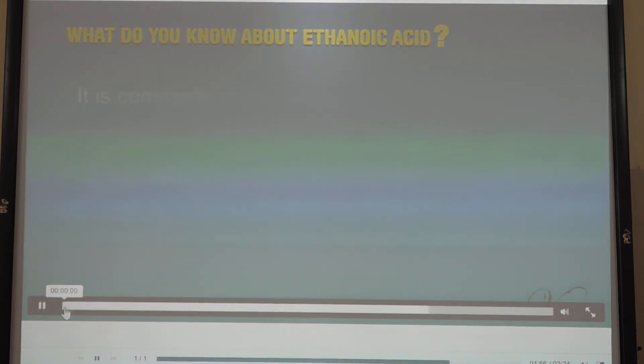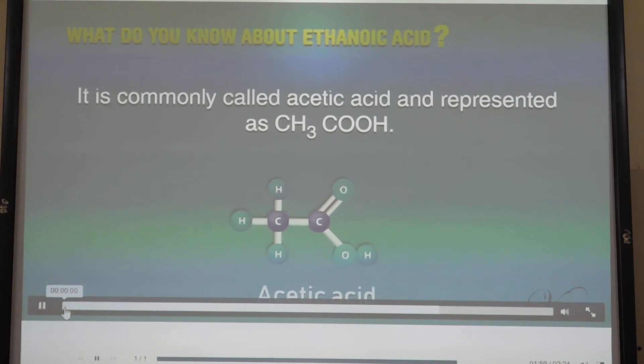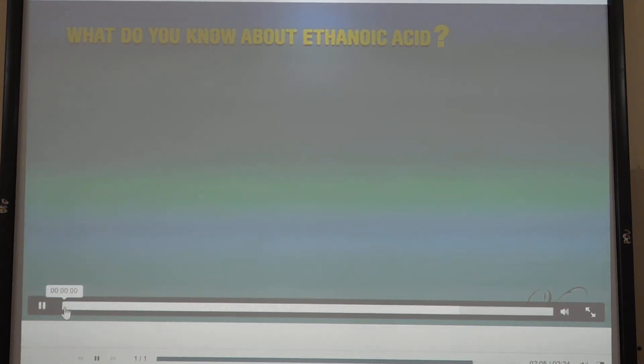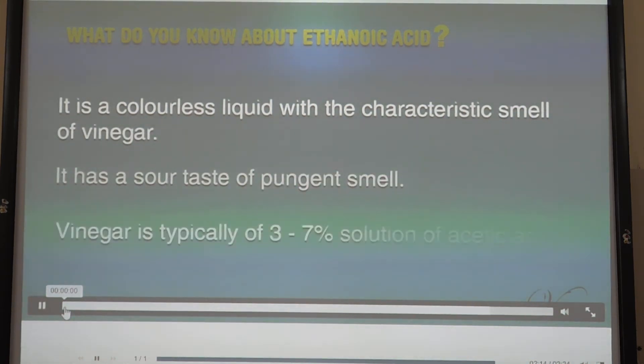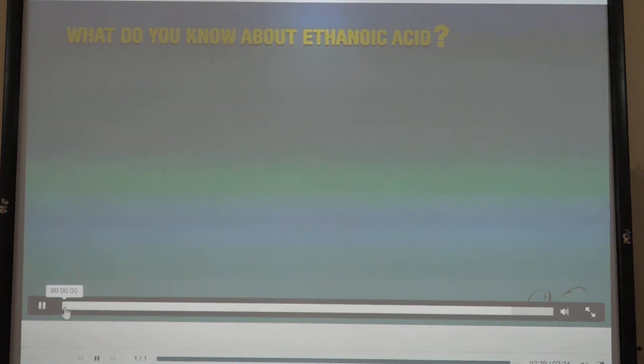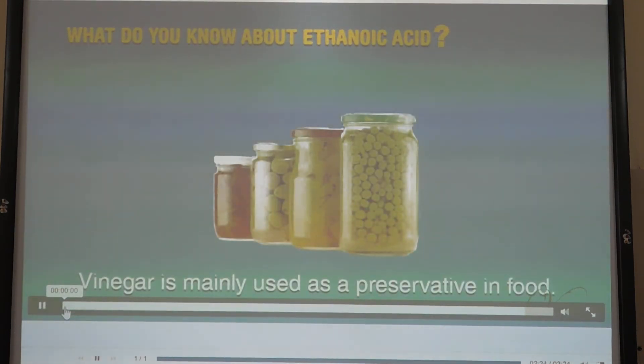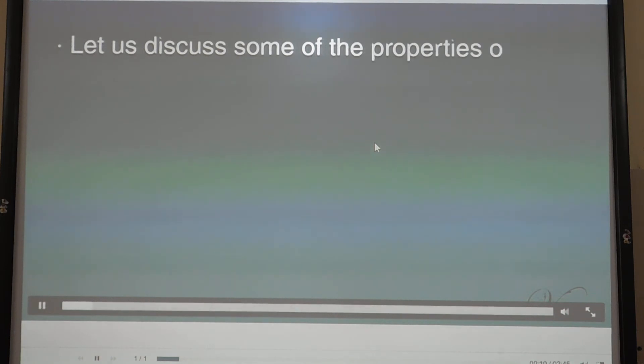Ethanoic acid is a carbon compound commonly called acetic acid and represented as CH3COOH. It is a colorless liquid with a characteristic smell of vinegar. It has a sour taste and pungent smell. Vinegar is typically a 3-7% solution of acetic acid in water. Vinegar is mainly used as a preservative in food.